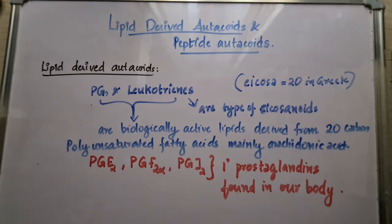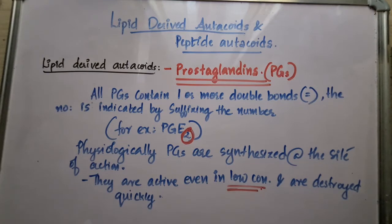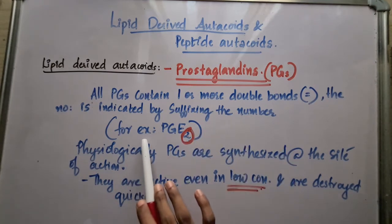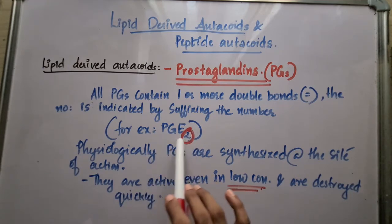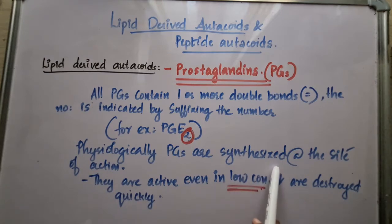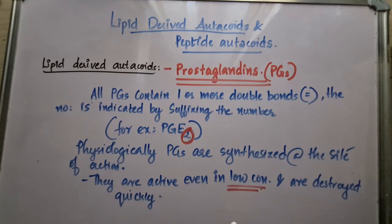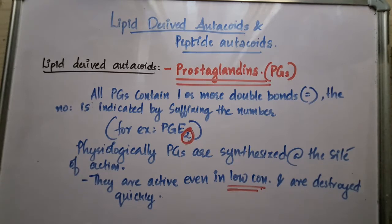PGE2, PGF2 alpha, and PGI2 are primarily found prostaglandins. All prostaglandins contain one or more double bonds, and the number of double bonds is indicated by a suffix in the name — for example, in PGE2, the '2' indicates two double bonds. Physiologically, prostaglandins are synthesized at the site of action and are active even in low concentration, but they are destroyed very quickly. Because of their instability, short duration of action, and lack of tissue specificity, natural prostaglandins have limited clinical application, but various synthetic derivatives exist to overcome these difficulties.